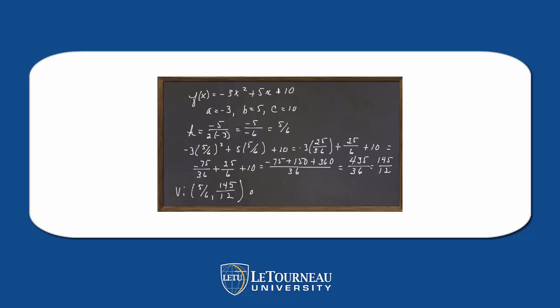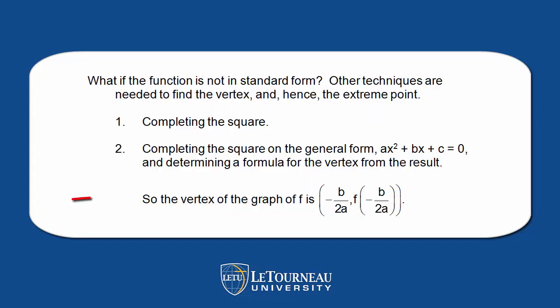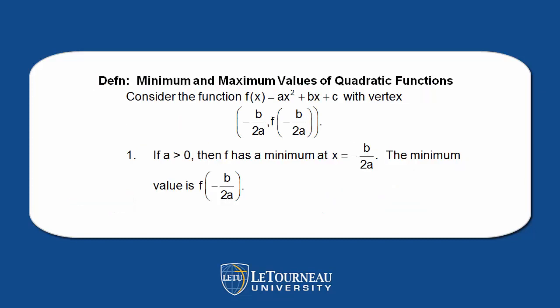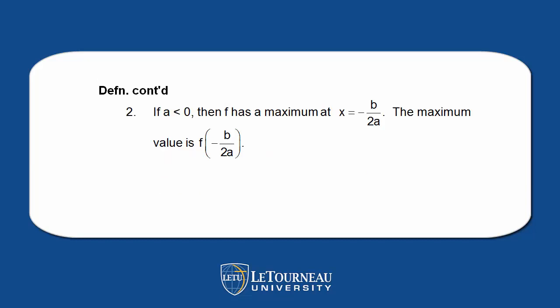Notice that a = -3, which is less than 0, so f(x) in this case has a maximum. We have a general formula for the vertex of the graph of a quadratic function — you need to memorize that formula. Definition: if a > 0, f has a minimum at x = -b/2a, and the minimum value is f(-b/2a). If a < 0, f has a maximum at x = -b/2a, and the maximum value is f(-b/2a).